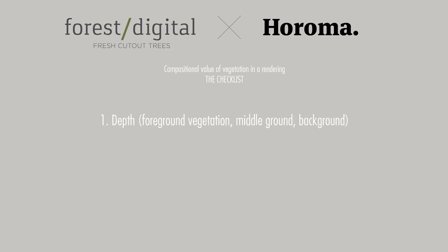To wrap up, here's a quick checklist to go through when inserting trees so each one serves a purpose. The first purpose is to match the landscape plan of your project, but then it has to bring something to the image. It can contribute to depth: foreground vegetation cuts the project from the context, middle ground separates it, and background trees add depth and imply things are happening behind the scene.